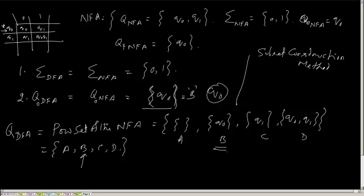Now let us come to the transition functions. D will not be the starting state because it contains an extra state Q1. It can be a final state — I will come to that — but it cannot be the starting state. So the starting state has to be B.